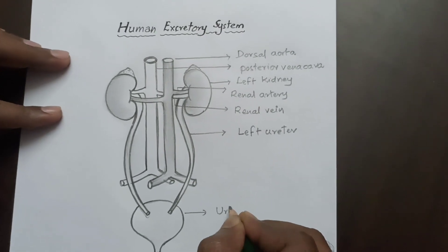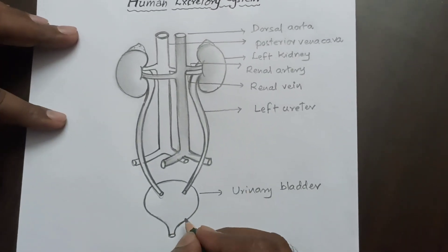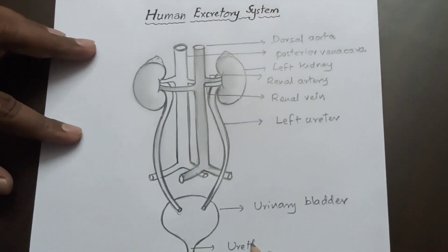This is urinary bladder, which collects urine from the kidneys. This is urethra.